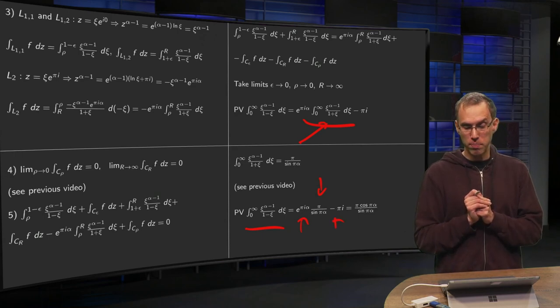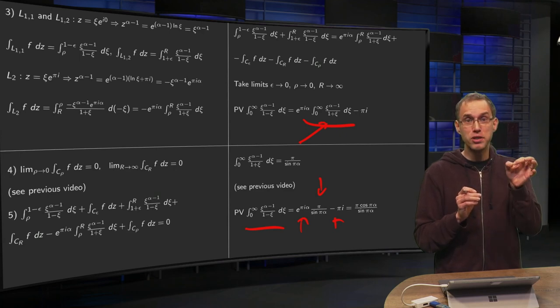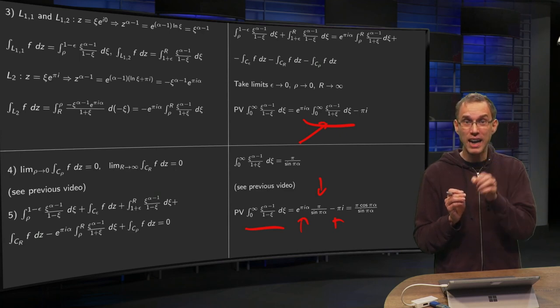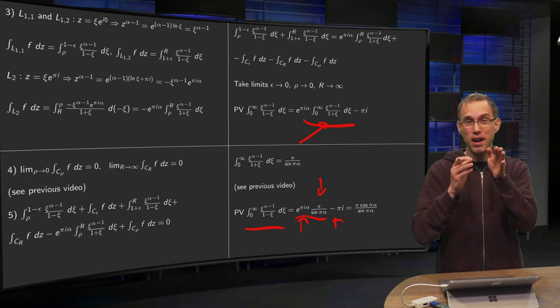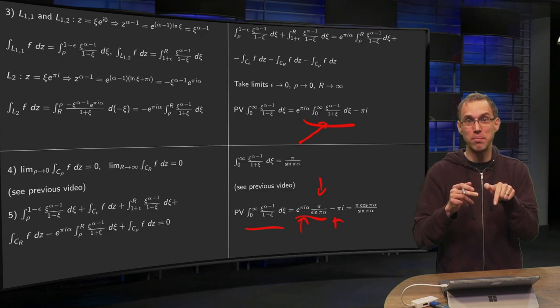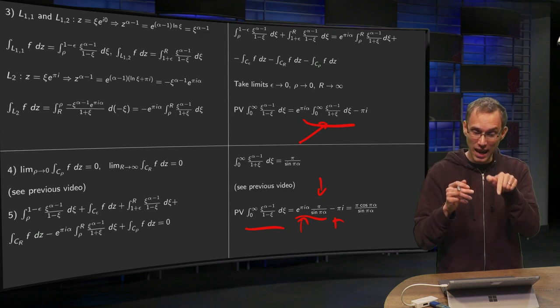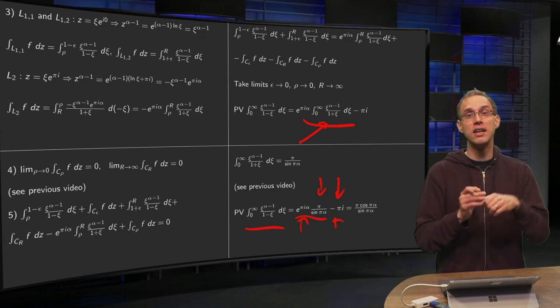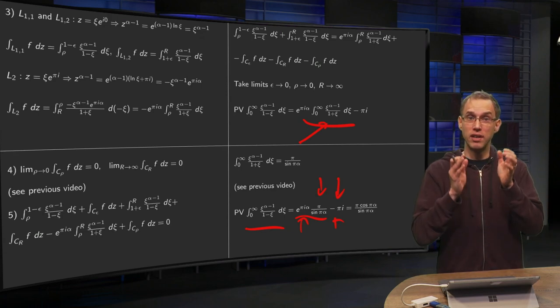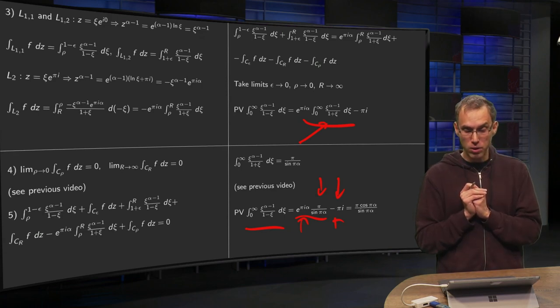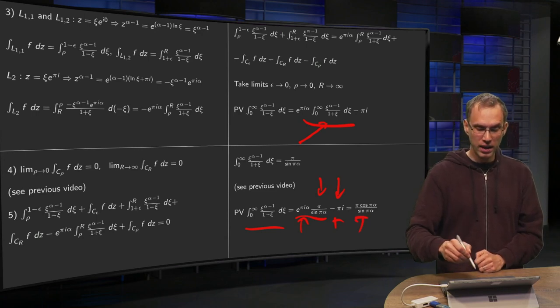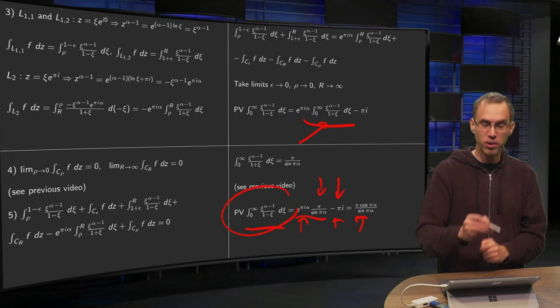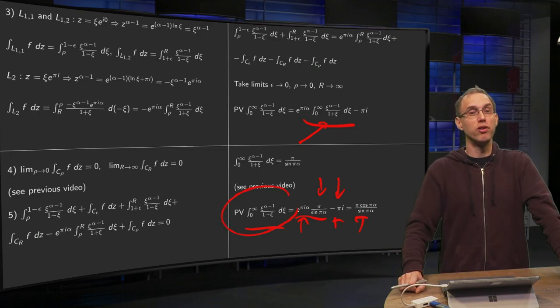But e to the power pi i alpha is cosine pi alpha plus i times the sine of pi alpha. So this imaginary part of this part gives you i times sin pi alpha times pi divided by sin pi alpha is i pi cancels with the minus i pi here. So you're only left with the cosine pi alpha times pi divided by sin pi alpha. And that's exactly the principal value of the integral we were looking for.